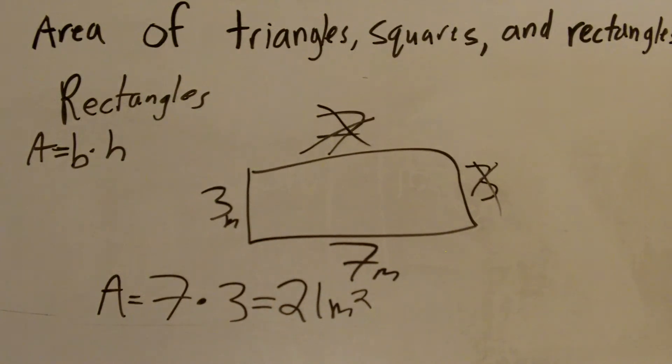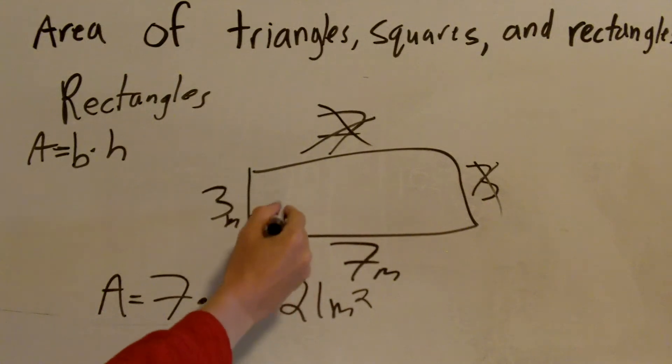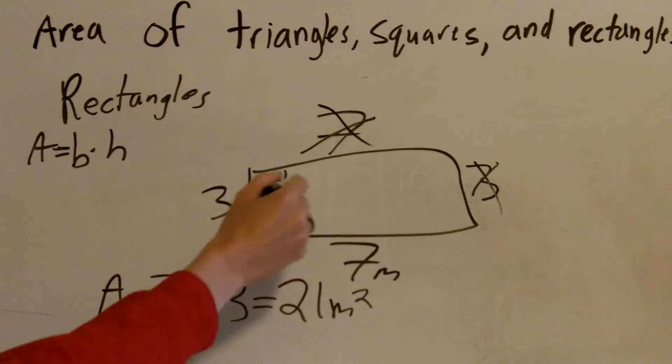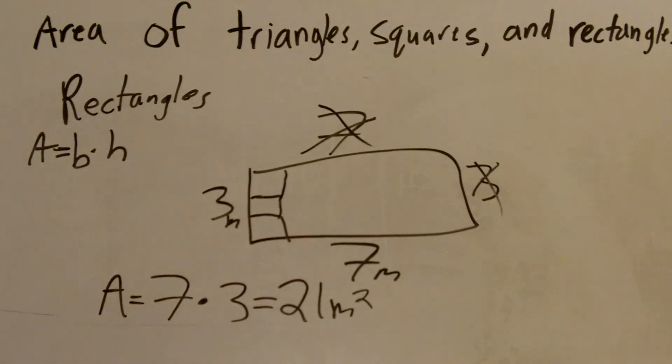Now when you're thinking about area, if you don't remember this, area is how many boxes that are 1 by 1 can fit in there. So in this case, there are 21 little boxes that are 1 by 1 could fit inside of that rectangle.